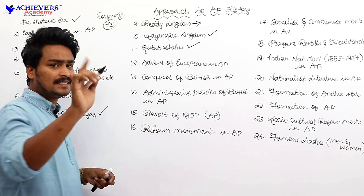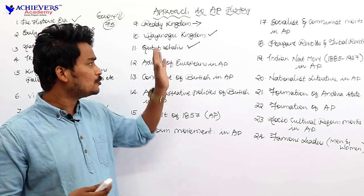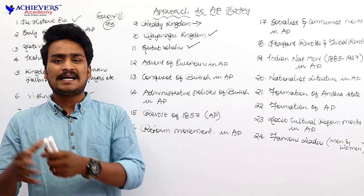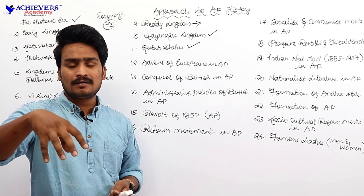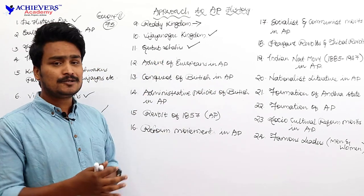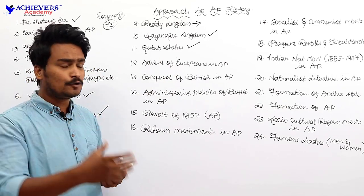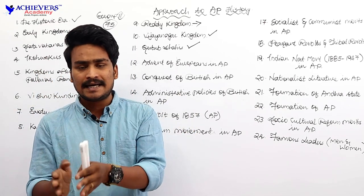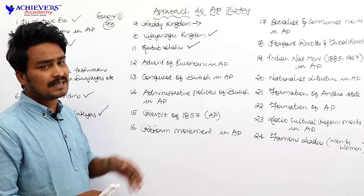After the fall of Vijayanagara Kingdom, we have another important dynasty — Kutub Shahis. Regarding Andhra Pradesh history, only the history of Kutub Shahis related to Andhra is important. The majority area ruled by Kutub Shahis was in Telangana. Kuli Kutub Shah gave permission to the Europeans. We need to study the Kutub Shahi rulers who are associated with Andhra.